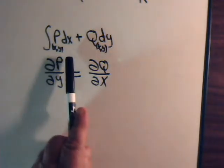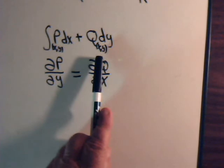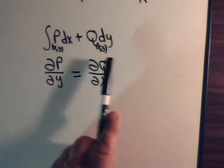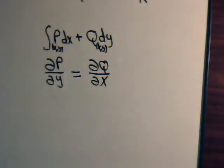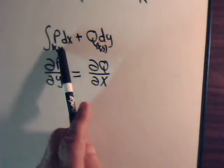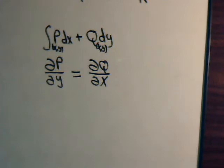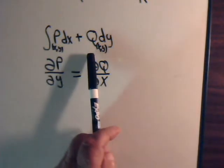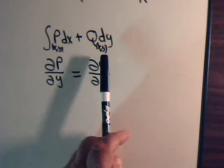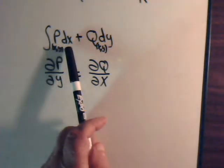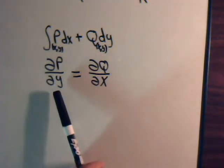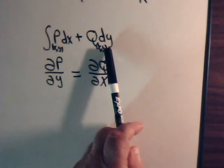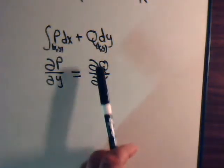If the expression p dx plus q dy is the differential of some function, that's called an exact differential. The test for exactness is whether the partial of p with respect to y equals the partial of q with respect to x. Notice the pattern: p is the coefficient of dx, q is the coefficient of dy. We take the partial of p with respect to the other variable y, and the partial of q with respect to the other variable x.